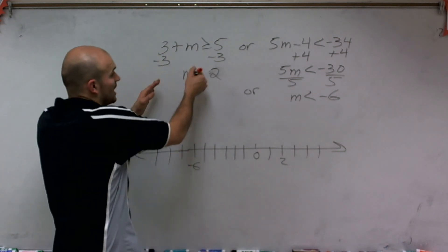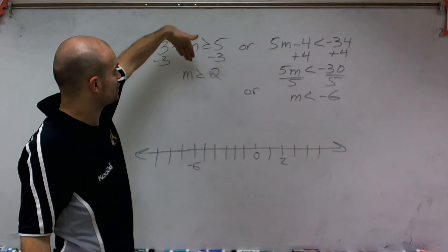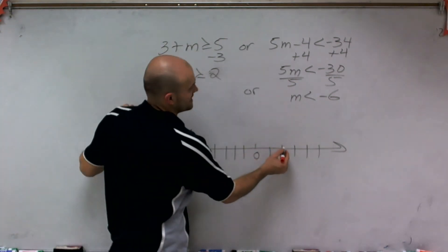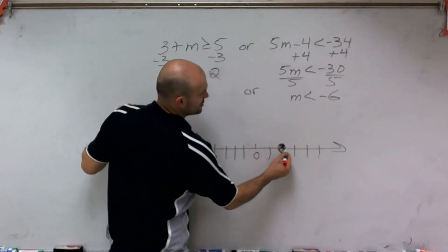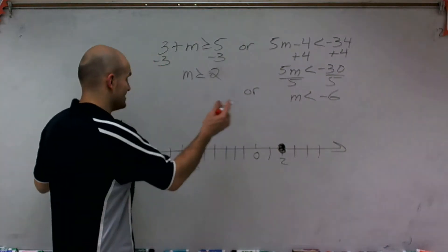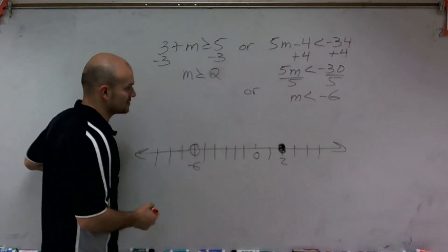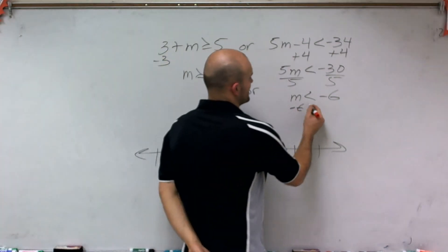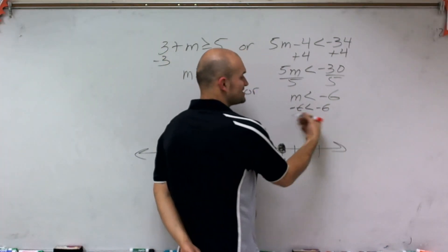OK. So we said that our inequality can be true for values that are greater than or equal to 2. So when it's saying it's equal to, that means that 2 is a part of our function. But since m is not equal to negative 6, we're going to leave it as an open circle. Because if you plugged in negative 6 is less than negative 6, that's not a true statement, right?